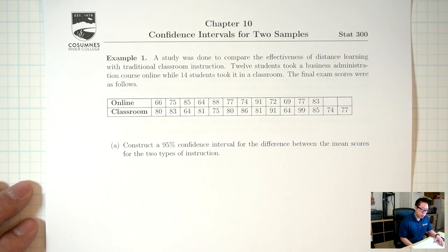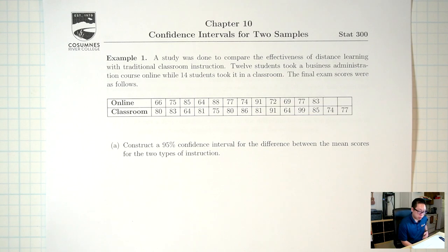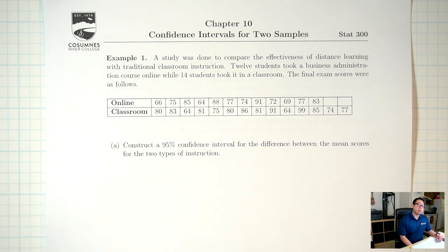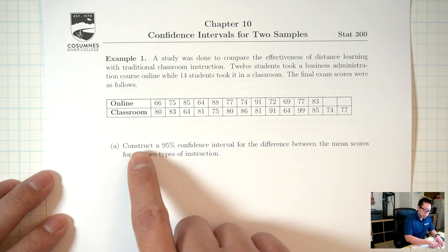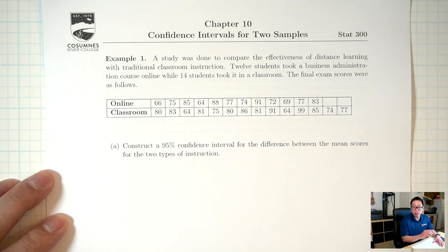Example one: a study was done to compare the effectiveness of distance learning with traditional classroom instruction. 12 students took a business administration course online, while 14 students took it in the classroom. The final exam scores were as follows. Part A: construct a 95% confidence interval for the difference between the mean scores for the two types of instruction. The first question we need to ask ourselves is: are we talking about proportion or are we talking about mean? It says 'the mean,' so definitely mean.